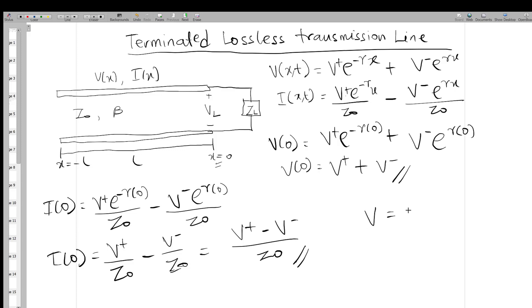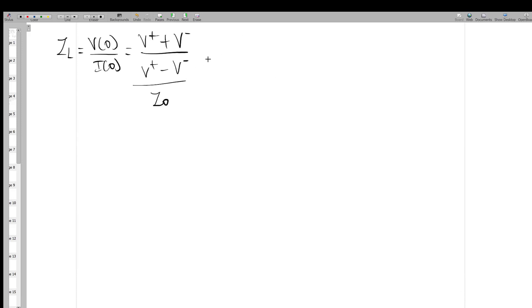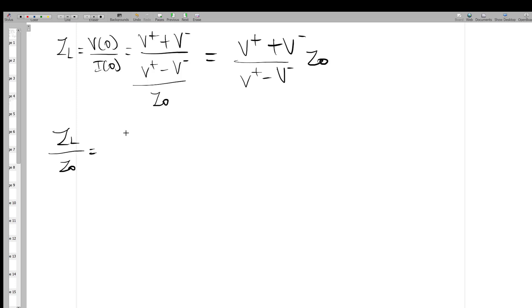Remember that V = IZ. So the load impedance Z_L equals V(0) / I(0). For V(0) we had V+ + V-, and for I(0) we had (V+ - V-) / Z₀. So Z_L / Z₀ = (V+ + V-) / (V+ - V-).